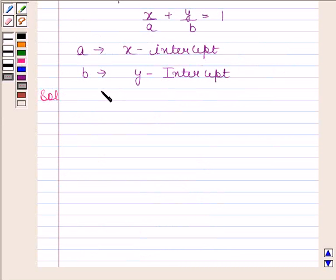The given equation is 3x plus 2y minus 12 is equal to 0. Now 3x plus 2y minus 12 is equal to 0 implies 3x plus 2y is equal to 12.